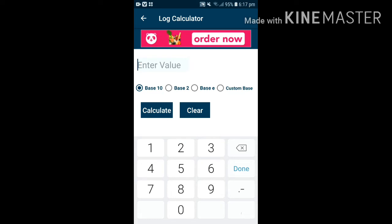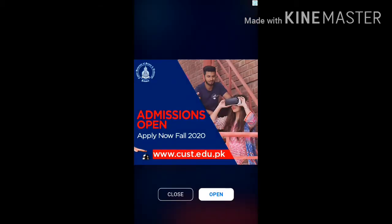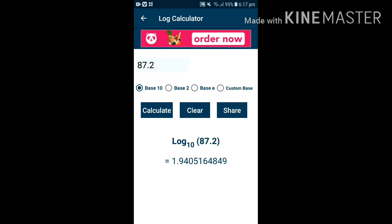Here I will enter the logarithm: 87.2. Calculate. So we have calculated log to the base 10 of 87.2 and the log has come this way.